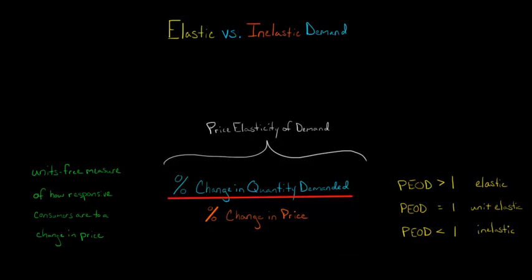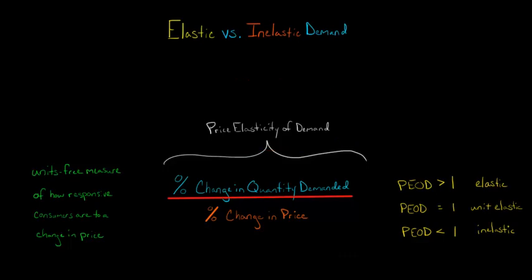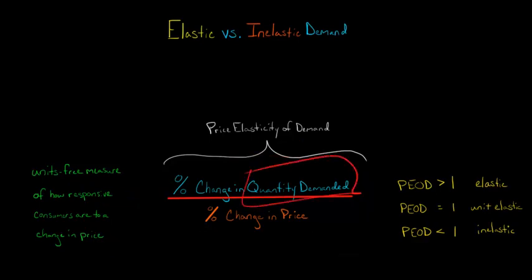In this video, we're going to discuss the difference between elastic and inelastic demand. When we talk about inelastic and elastic demand, what we're really talking about is price elasticity of demand. Price elasticity of demand is a measure of how responsive consumers are to a change in the price of a good or service, and we calculate it with this formula: the percentage change in quantity demanded divided by the percentage change in price.